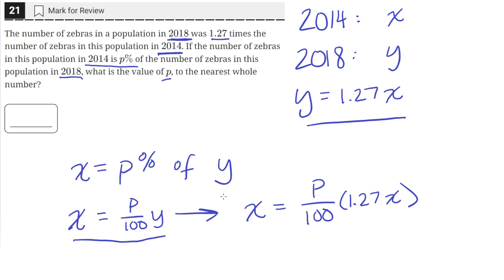So now, since we know that x is non-zero, we can just divide that from both sides. And if we do that, we'll divide this side by x and this side by x. On the left-hand side, we'll be left with 1. And on the right-hand side, we'll be left with p times 1.27 divided by 100.